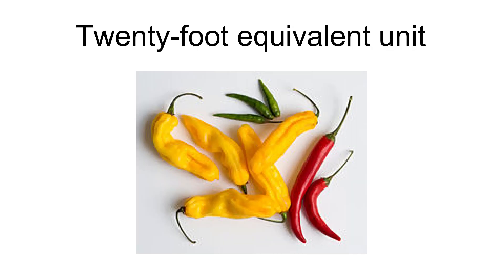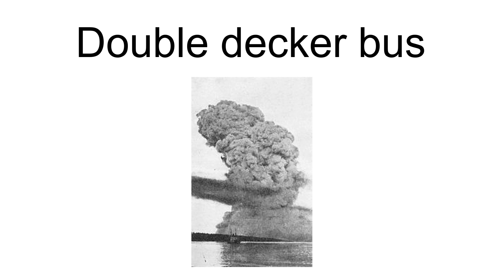The 20-foot equivalent unit, or TEU, is the volume of the smallest standard shipping container, equivalent to 1,360 cubic feet, 39 cubic meters. Larger intermodal containers are commonly described in multiples of TEU, as are container ship capacities. The approximate volume of a double-decker bus, abbreviated to DDB, has been used informally to describe the size of a hole created by a major sewer collapse. For example, a report might refer to a 4-DDB hole.